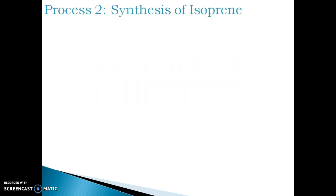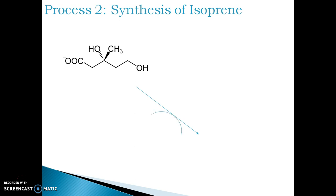Now let us see process 2, i.e. synthesis of isoprene from mevalonate. The mevalonate is phosphorylated utilizing coenzyme ATP and cofactor magnesium divalent ions. The phosphorylation occurs on the 5th position to form mevalonate 5-phosphate, which is again phosphorylated to mevalonate 5-diphosphate.